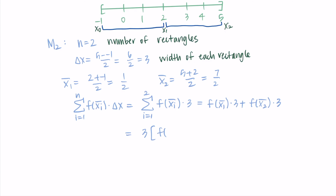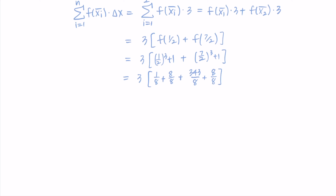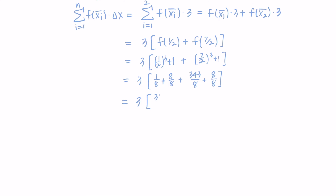Factoring out the 3 and substituting our midpoints: 3 × (f(1/2) + f(7/2)). Using x³ + 1: f(1/2) = (1/2)³ + 1 = 1/8 + 8/8 = 9/8, and f(7/2) = (7/2)³ + 1 = 343/8 + 8/8 = 351/8. Adding: (9/8 + 351/8) = 360/8 = 45. Multiplied by 3 gives 135 — that's our midpoint Riemann sum with two rectangles.